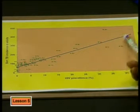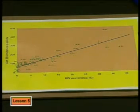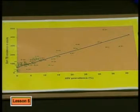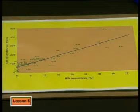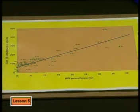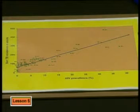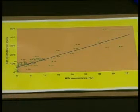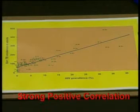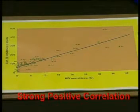The slope of the line shows us that there is a relationship between the prevalence of TB and the percentage of people living with HIV. It shows us that as the percentage of people living with HIV increases, so the incidence of TB also increases. The slope increases from left to right, so it is a positive slope. There are some points that lie quite far off the line of best fit, but not many — so we can say that there is a strong positive correlation between HIV prevalence and the incidence of TB.